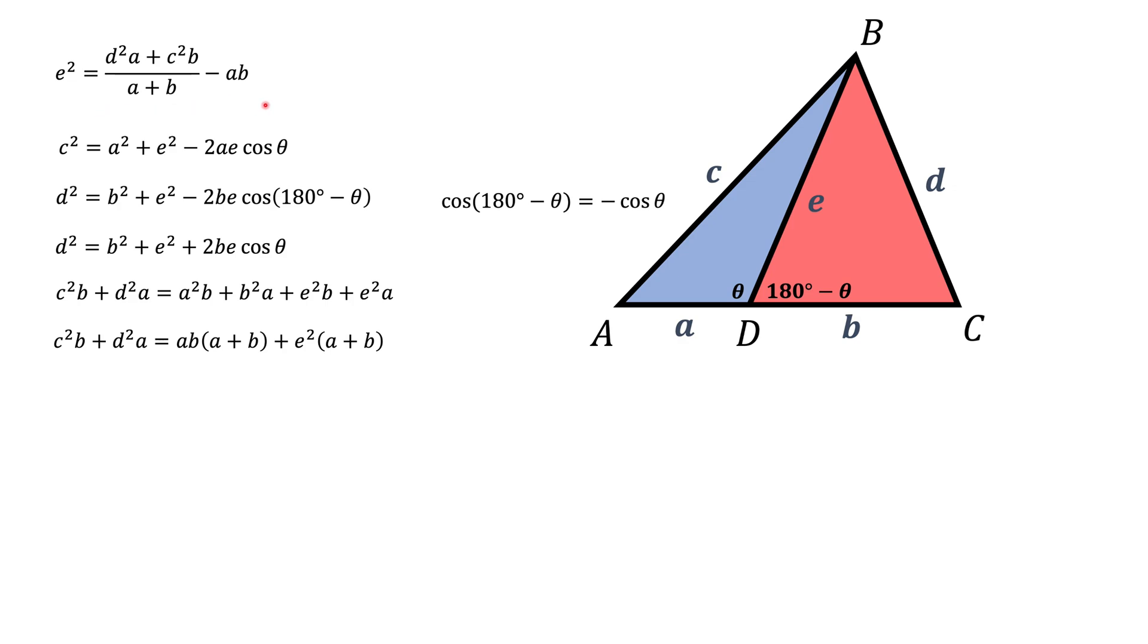But in many cases, we don't really need this formula. It's sufficient to look at this formula. Because the last formula is only useful if you know A, B, C, D and we are looking for E. But sometimes E may be known to you and we would like to find something else. In this case, this formula or this formula would be more useful.